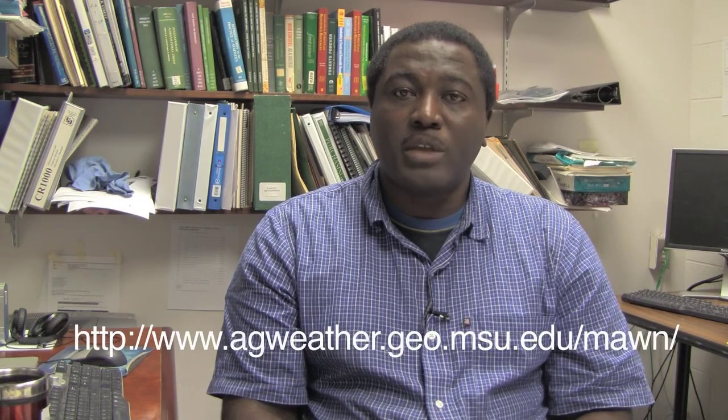At Michigan State, we have a weather station network called MON, and if you are located in Michigan, it is very likely that you have a MON station not too far from your location.